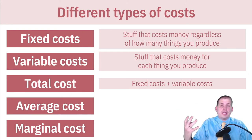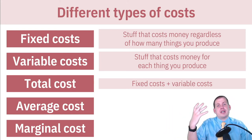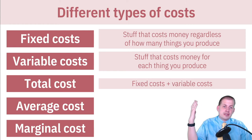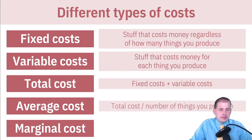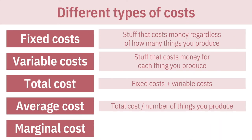You take all the fixed costs and all the variable costs, add them together, and that's the total cost of creating your stuff — whether it's pizza, ice cream, waffles, or spoons. The average cost is straightforward to calculate: you take the total cost and divide it by the number of things you make. So if it costs $100 to make 10 waffles, the average cost is $10 per waffle.